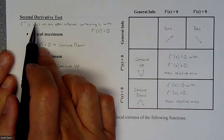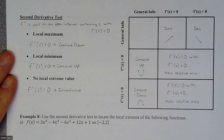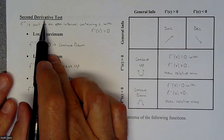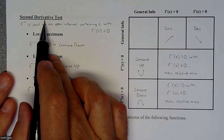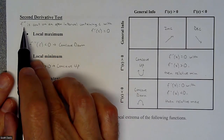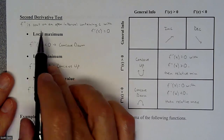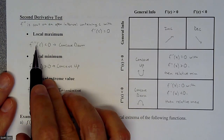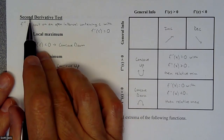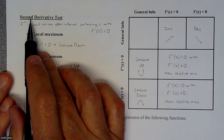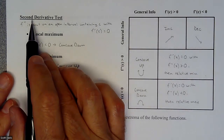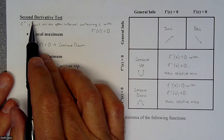In this lesson, we're going to be talking about and introducing the second derivative test. The second derivative test lets us get information about maxes and mins from the second derivative. So the second derivative exclusively talks about concavity, but it also can imply that we have some other information going on.